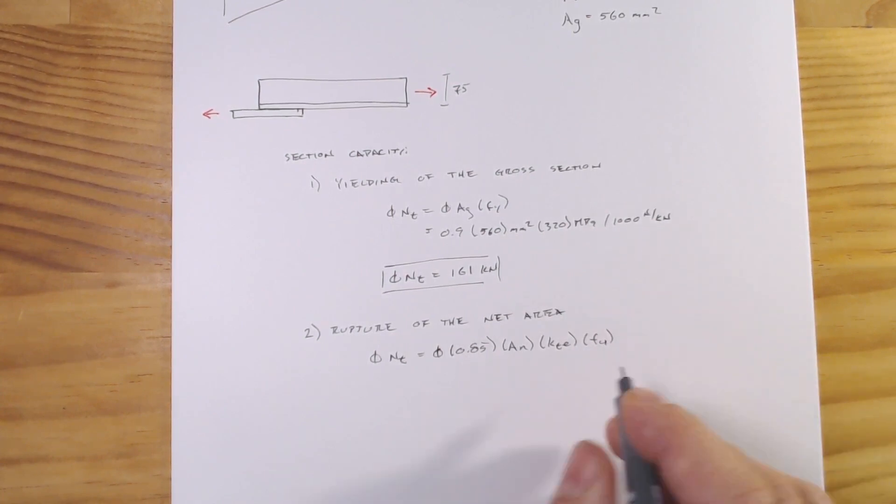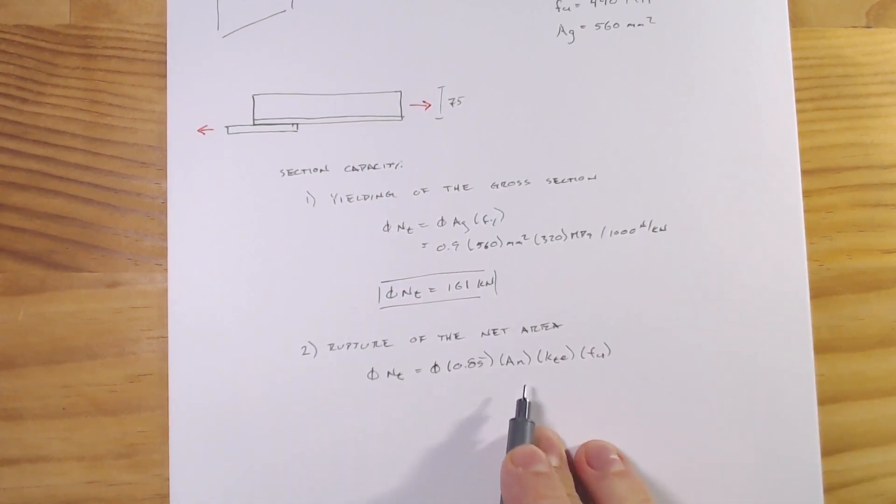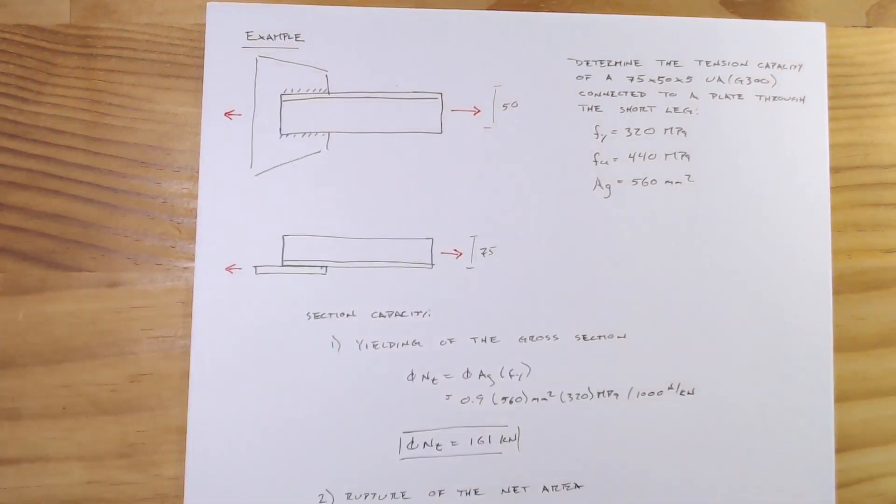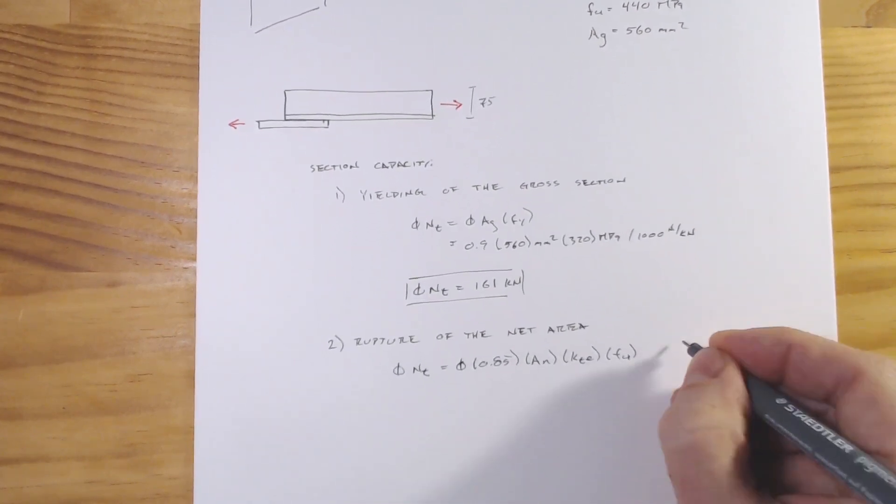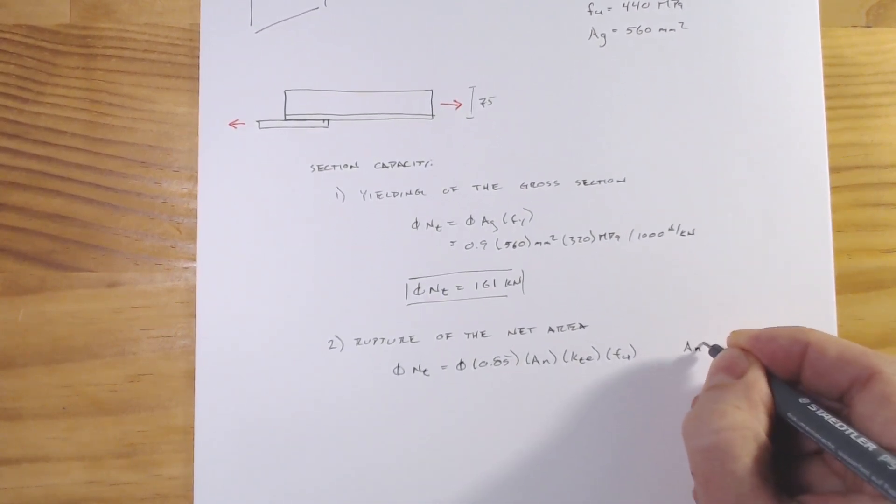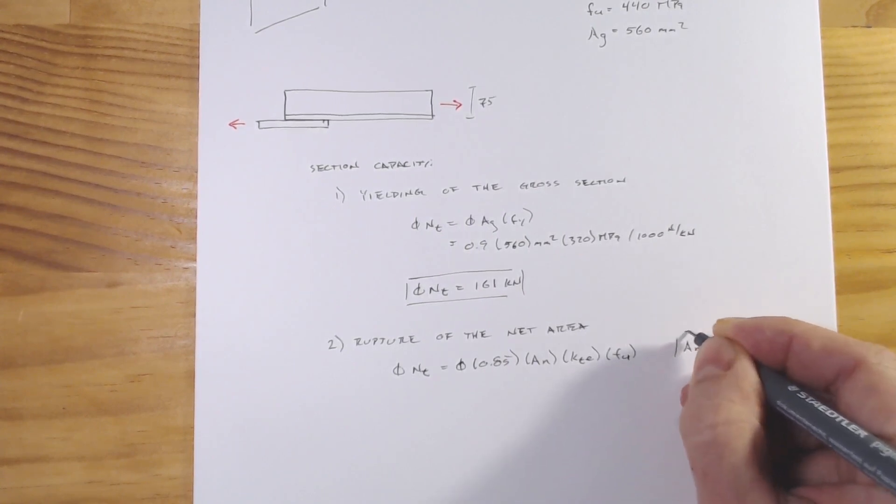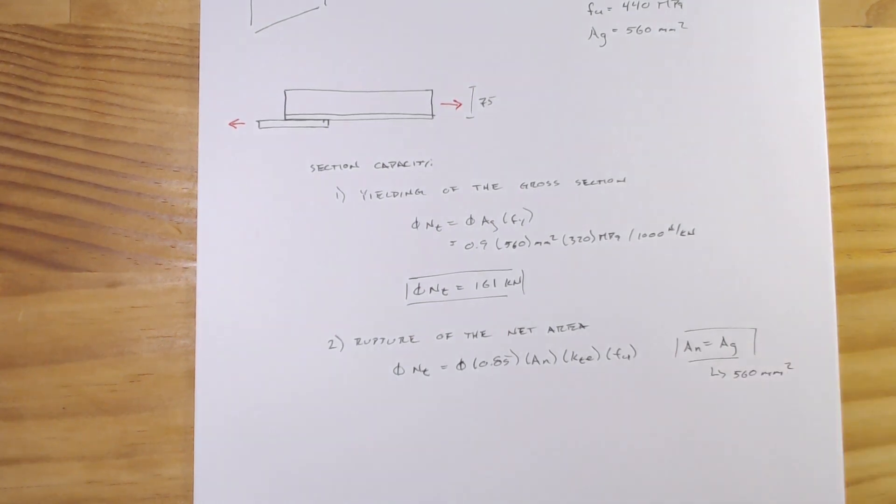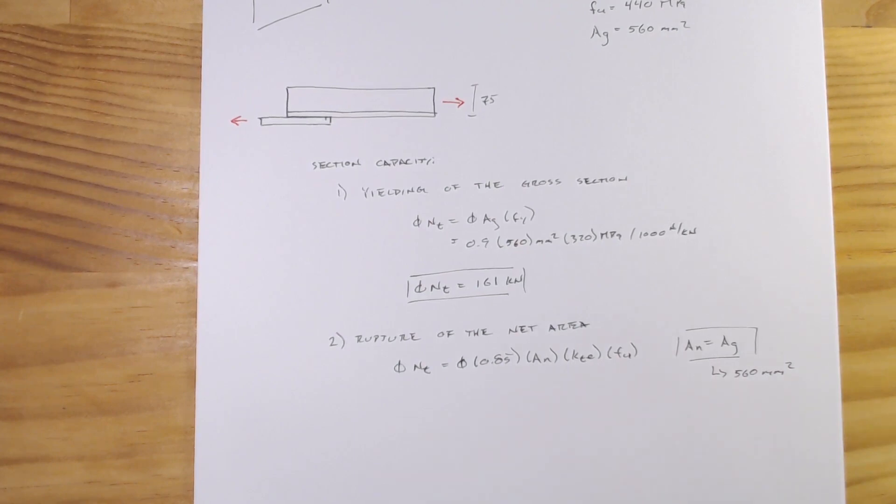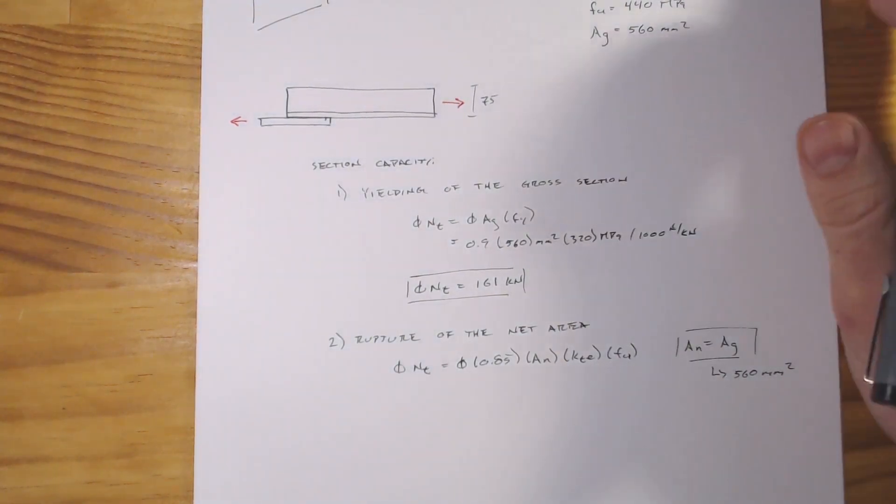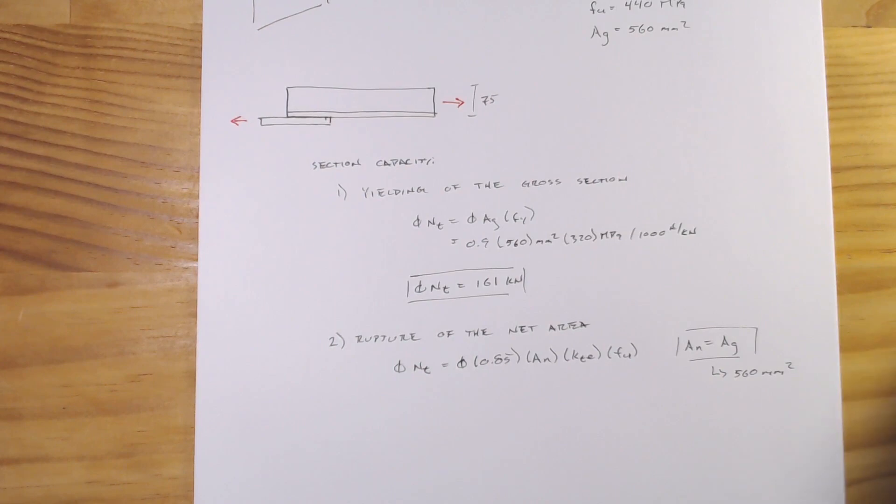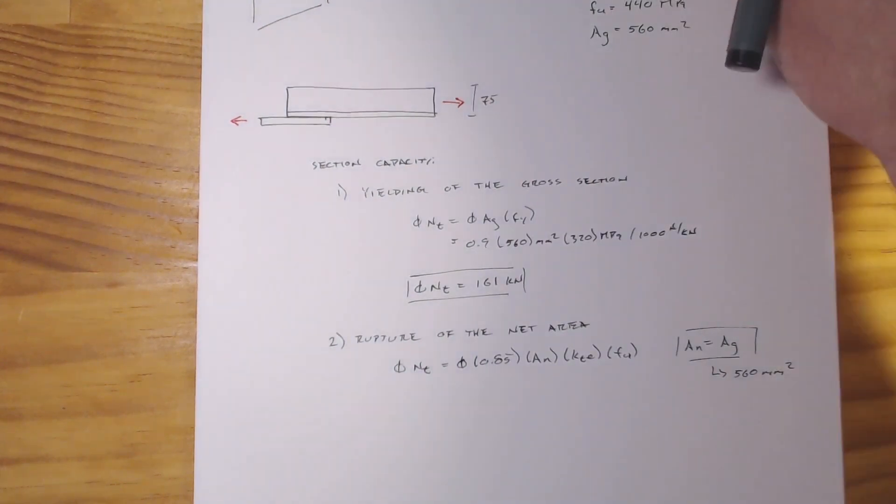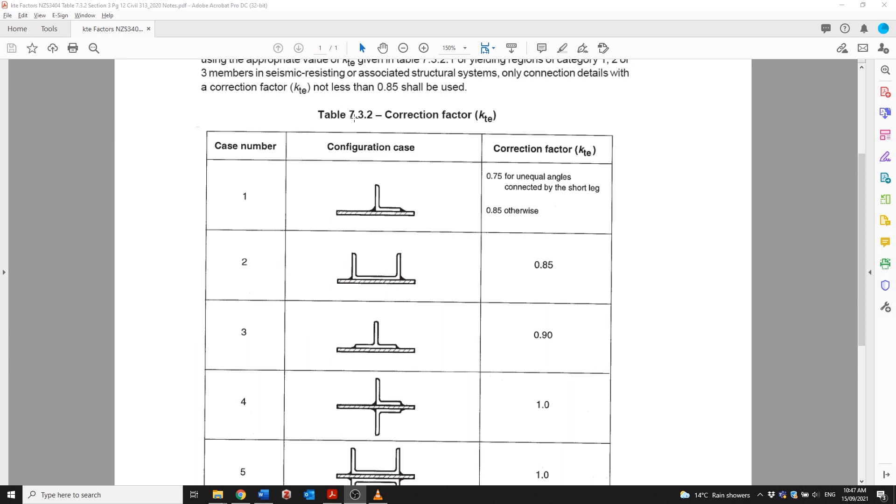Here the net area, because we have no holes in there for this case which is this welded connection, our net area is going to equal our gross area. That's of course going to be 560 millimeters squared as it was up above. Now when we want to look at this kte factor, we actually go into the steel standard and let's just kick over to that now. It's in this table 7.3.2.